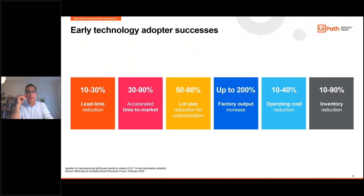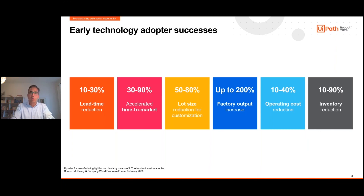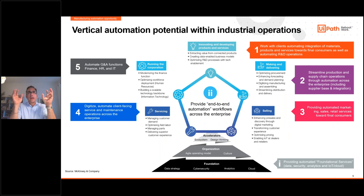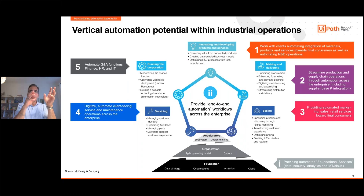The question is: what do you want to achieve with automation? Early studies with the World Economic Forum show that if you truly master technology and are an early adopter, you can see success well beyond typical headcount attrition — in factory output, operating costs, and inventory reduction. When we started out, clients asked us to automate G&A functions like finance, HR, and IT. Then something happened — clients took our products and figured out they could take it across their supply chain: into R&D operations, the service organization, and the selling side.